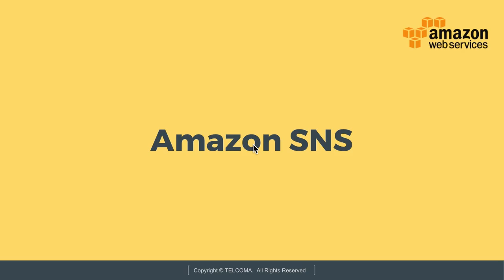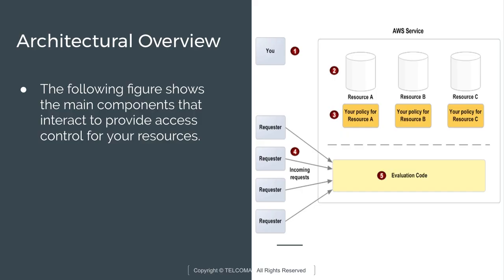Hello and welcome to another class of Amazon SNS. Today in this class of Simple Notification Service we are going to discuss its architectural overview. Here we are having AWS services, an evaluation code, and requesters — resource A, resource B, and resource C.